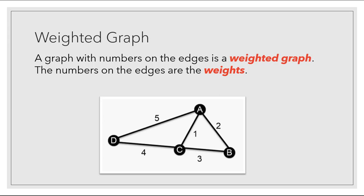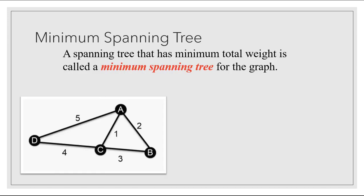We're going to be finding spanning trees for weighted graphs. A graph with numbers on the edges is called a weighted graph — the numbers on the edges are weights. They can represent distances, times, dollar amounts, or various other quantities in applications where we use graph theory. We will be looking for a special kind of spanning tree that has a minimum total weight, called a minimum spanning tree. Before we look at how we find one, let's look at a few spanning trees and their weights.